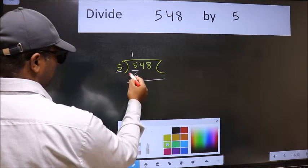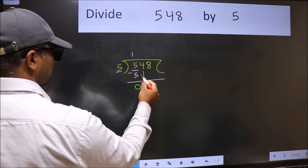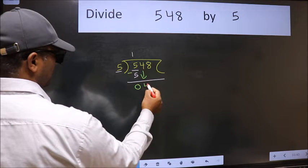Now we should subtract. We get 0. After this bring down the beside number. So 4 down.